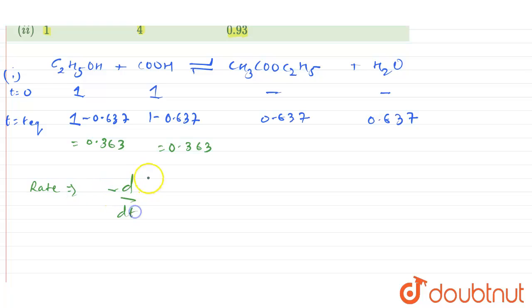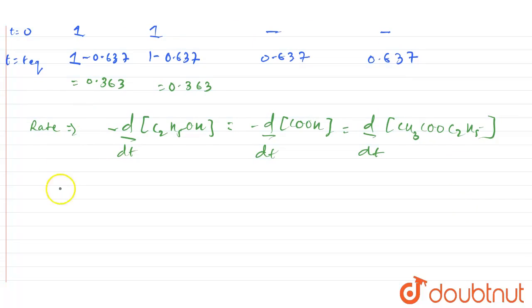The rate equals K times concentration of C2H5OH, minus d/dt for C2H5OH, or this equals minus d/dt of COOH. That equals positive d/dt of CH3COOC2H5.